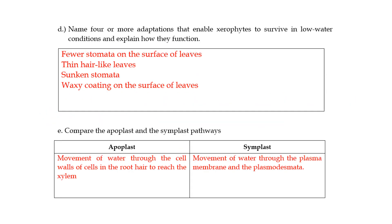Name four or more adaptations that enable xerophytes to survive in low water conditions. So I haven't explained how they function on the slides but I'll just try to give you an idea. So they have few stomata on the surface of their leaves so if there are fewer stomata it means that when the stomata open they won't lose as much water as if there was like a lot of stomata which would be losing water around the same time especially when the temperature and light intensity is right. Some of them have very thin hair like leaves and because the leaves are so thin the surface area is so small that they don't lose as much water as a normal plant would.